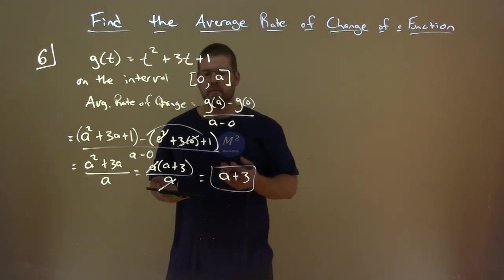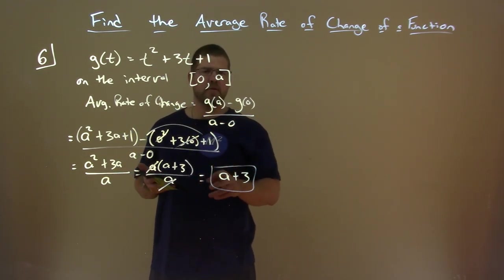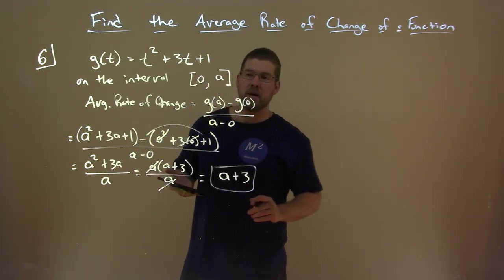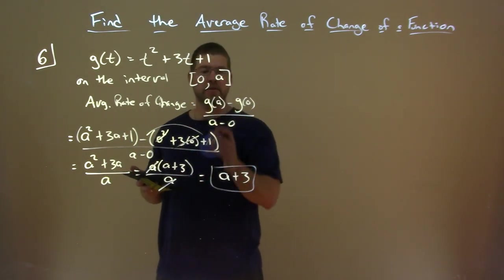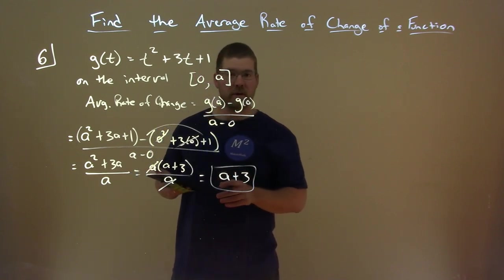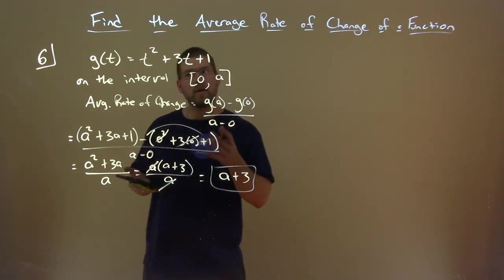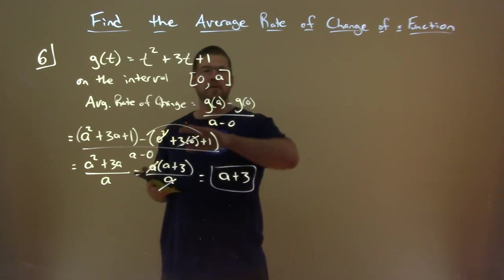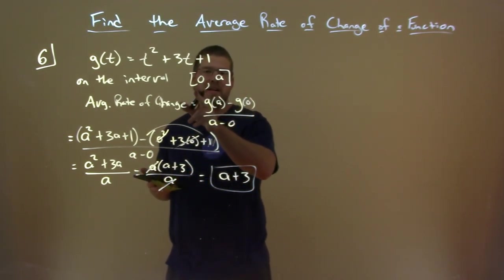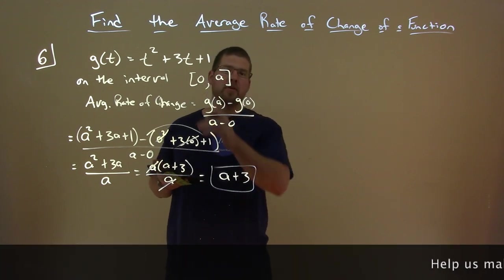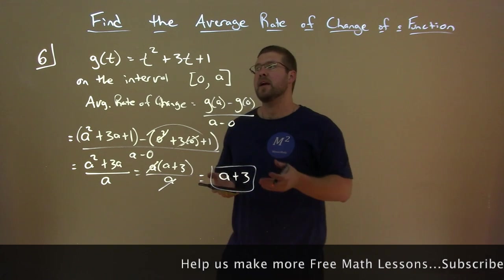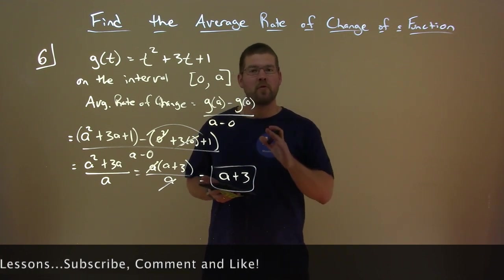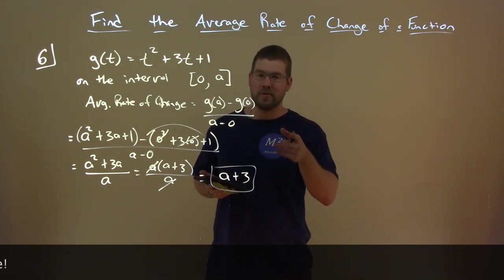This is actually beneficial — if you want the average rate of change from 0 to 1, plug a = 1 and get 4. From 0 to 5, plug a = 5 and get 5 + 3 = 8. By keeping variables, we can find the average rate of change from 0 to any value. I hope you learned something about finding the average rate of change. Please subscribe to our YouTube channel and like this video — this helps us make more free math lessons. Thanks for watching.